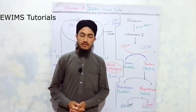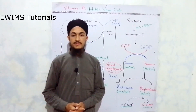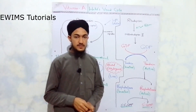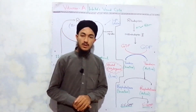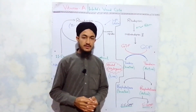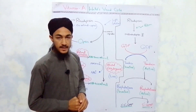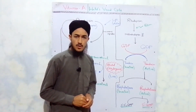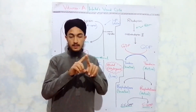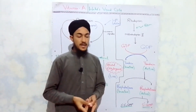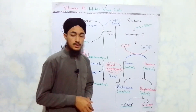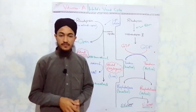Today we will be talking about one of the most important functions of vitamin A related to our vision, known as Wald's Visual Cycle. This cycle was elucidated by a scientist named George Wald, which is why it is called Wald's Visual Cycle. It is also known as the rhodopsin cycle. The process of our vision occurs in a cyclic pathway, and in this lecture we will discuss that pathway in detail.